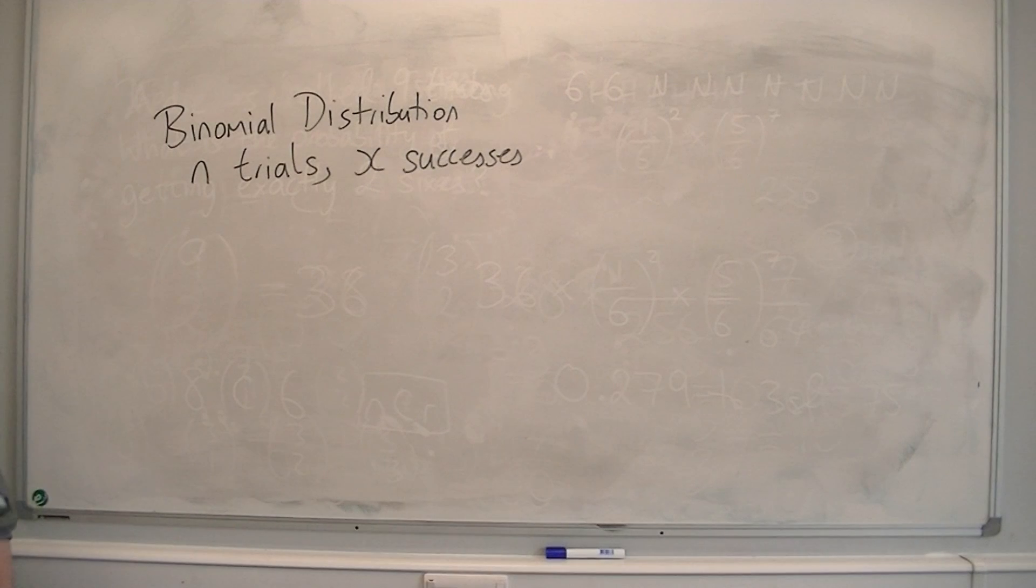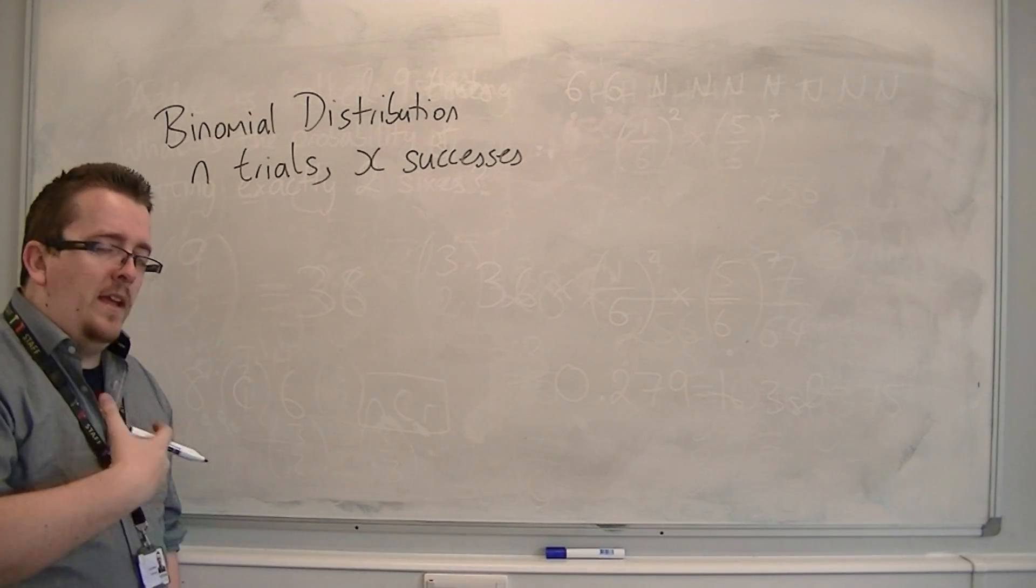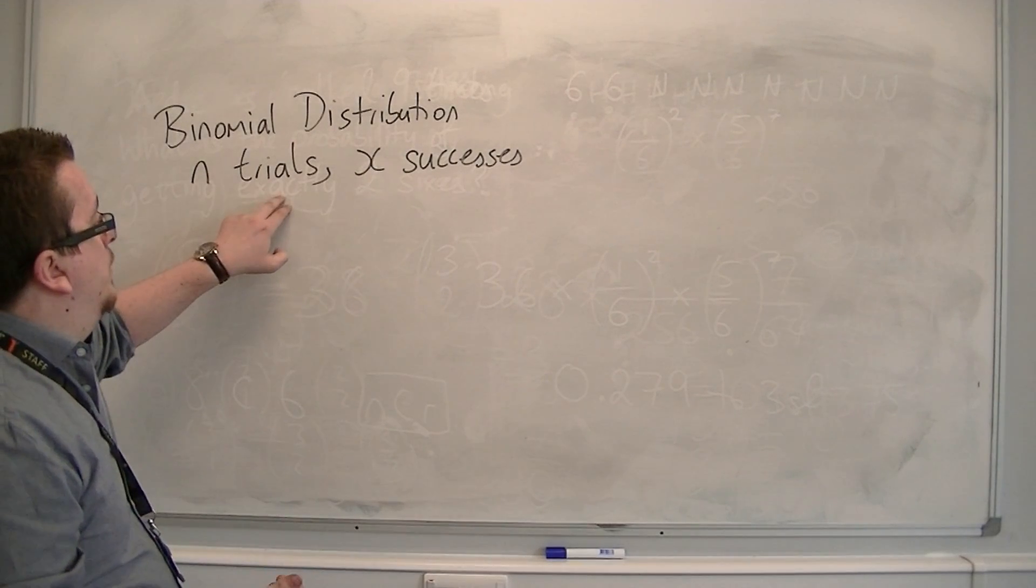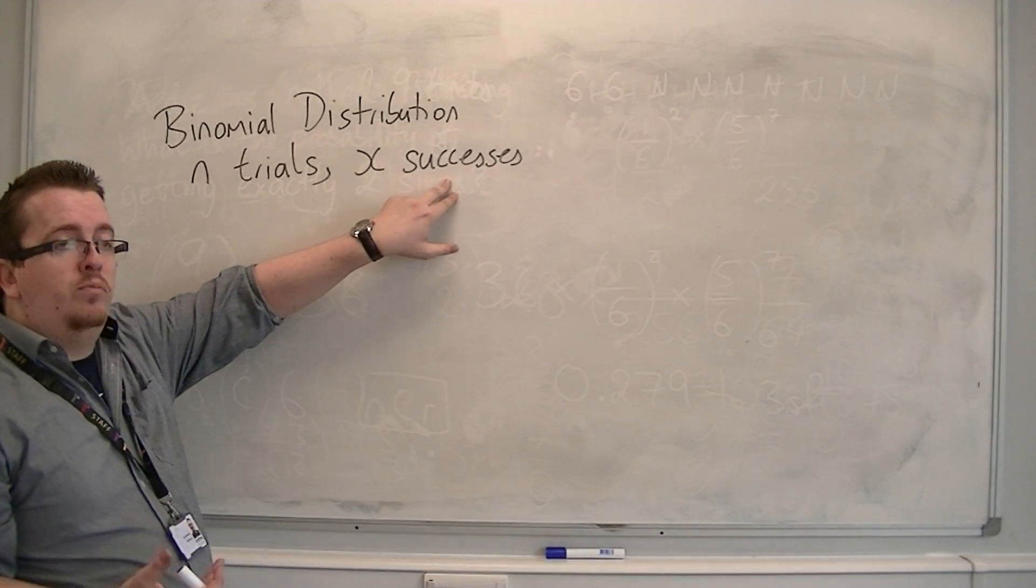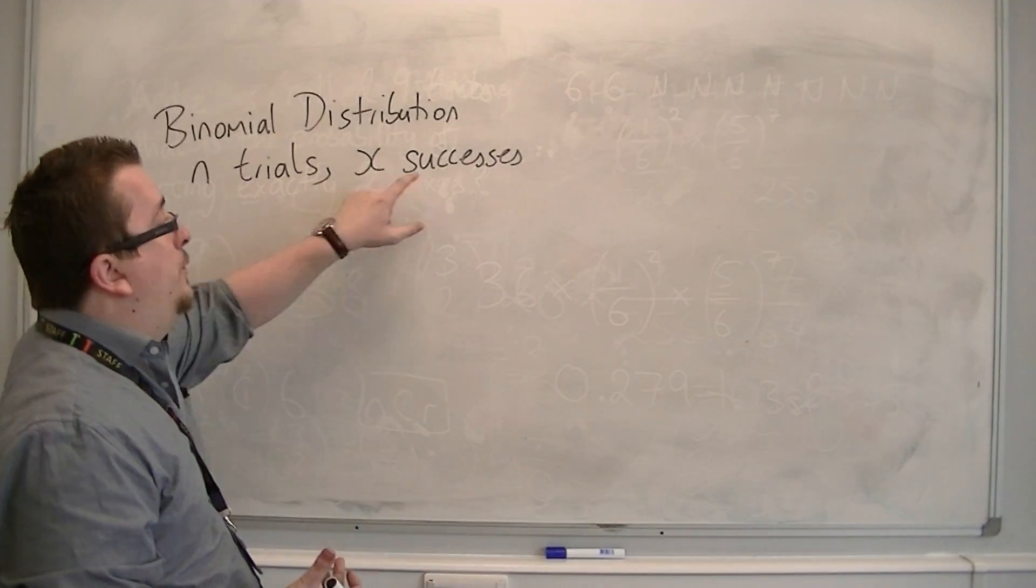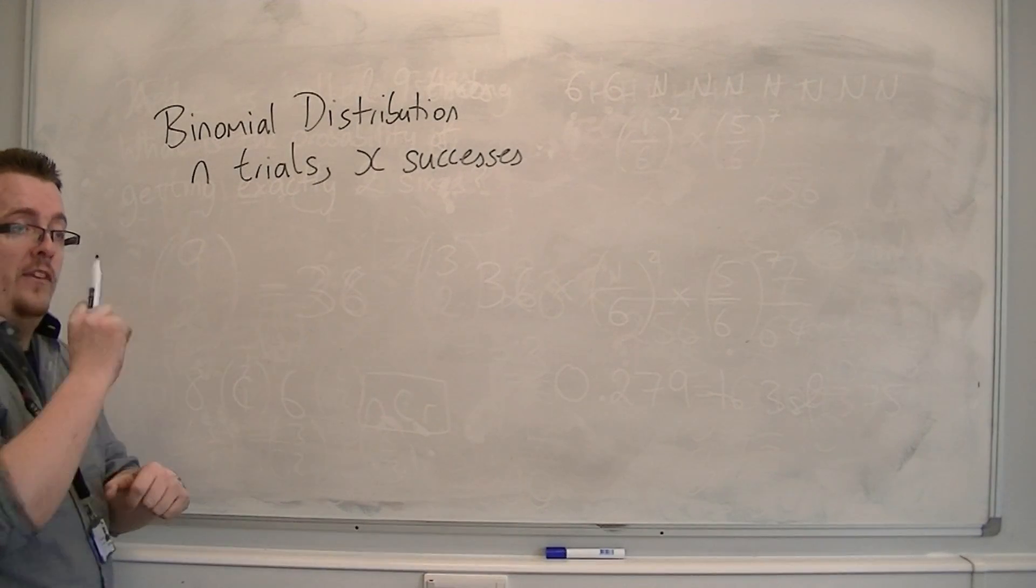So, in the previous video, I talked to you about rolling a die nine times, so there would be nine trials, and I wanted the probability of it getting exactly two sixes, so I'd have two successes. I would count that as a success when the six appeared.